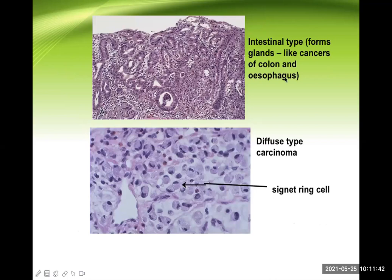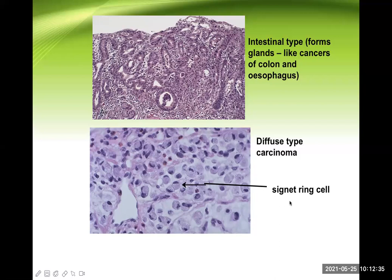The intestinal type looks like intestinal glands — the gastric epithelium is changing to the intestinal type, similar in appearance to cancer of the colon and esophagus. The diffuse type shows signet ring cells where the nucleus is pushed to the periphery and there is a lot of mucin collection in the cytoplasm, giving a ring-like appearance. These are the two important histological types — intestinal type and diffuse type of gastric cancer.